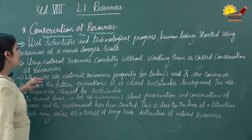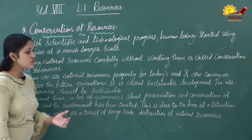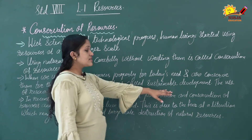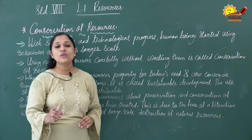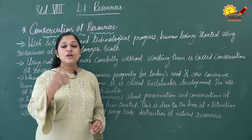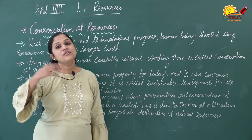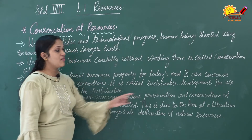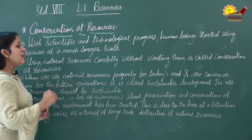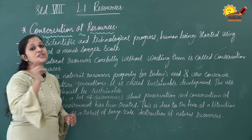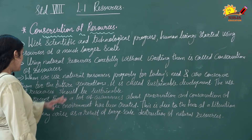When we use natural resources properly for today's needs and also conserve them for future generations, it is called sustainable development. The use of resources is sustainable when you are using resources at present carefully and also conserving them for the future.